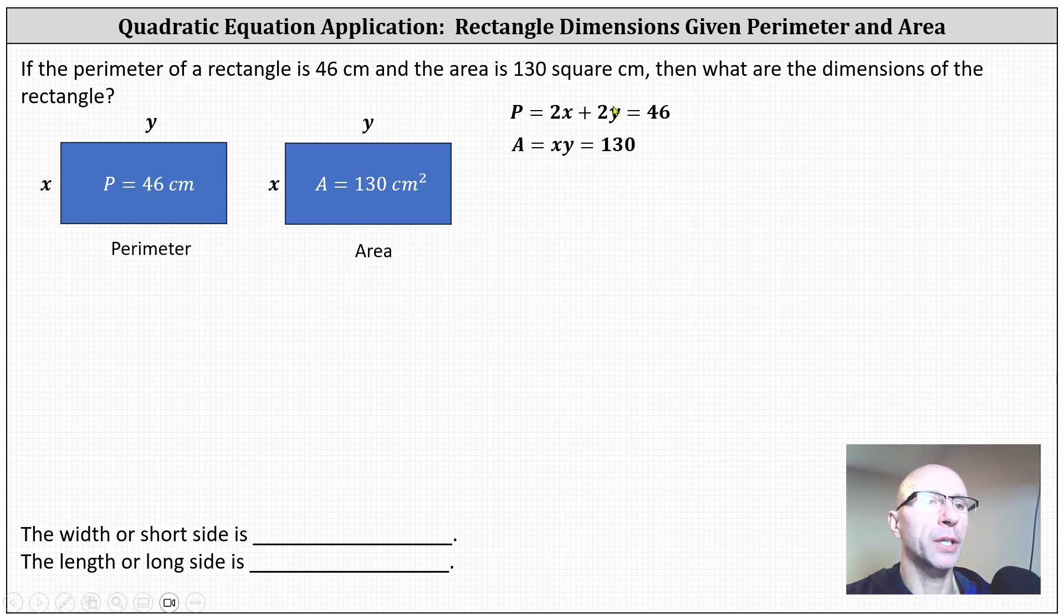Using the first equation, let's first isolate 2y by subtracting 2x on both sides. This gives us 2y equals 46 minus 2x. And now to solve for y, we divide both sides by 2, which gives us y equals 23 minus x.